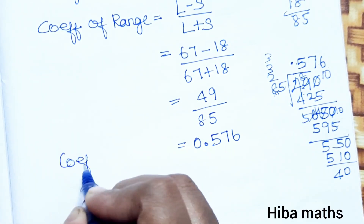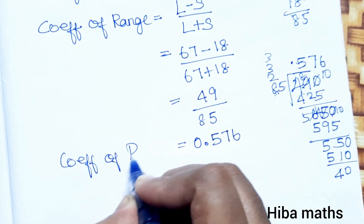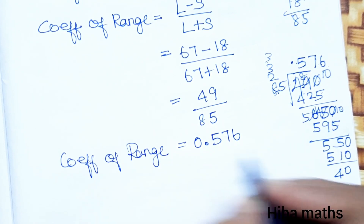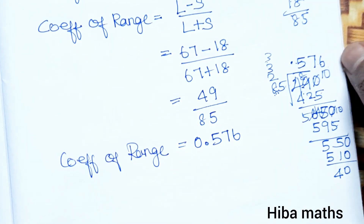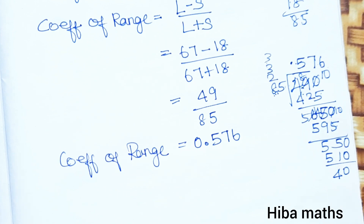This is the coefficient of range value: 0.576. The division is done. If you have any doubts, please ask in the comment section. Thank you so much for watching.